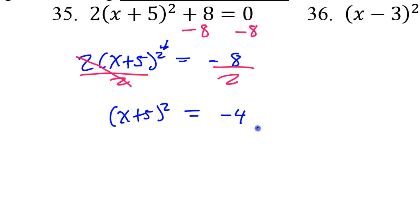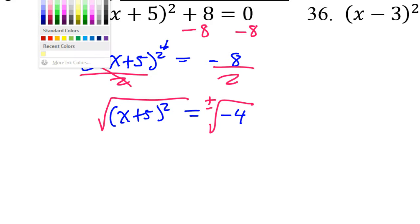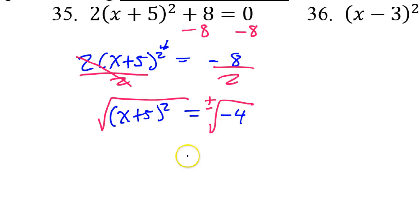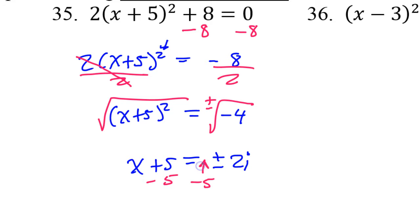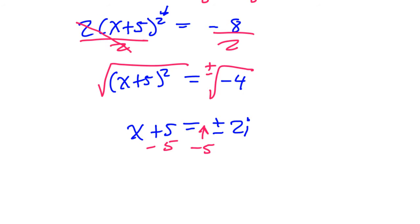Take the square root of both sides. Don't forget your plus or minus. On the right side I have plus or minus 2i, and on the left I just have x plus 5. Last step: subtract 5 from both sides, put it in the front. The final answer will be x equals negative 5 plus or minus 2i.